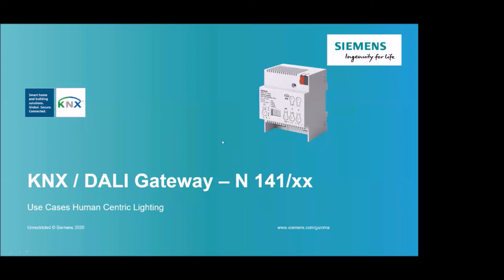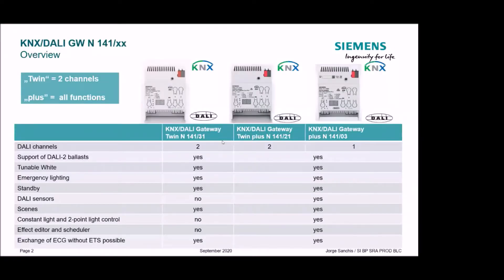Let's start with an overview of our KNX Gateway family. We have three devices with different channels and different functions. We have two devices with two channels — the 31 and 21 — and one with one channel, which is the server-free. All of them support DALI ballasts, and with the last update all of them support tunable white and emergency lighting standby.